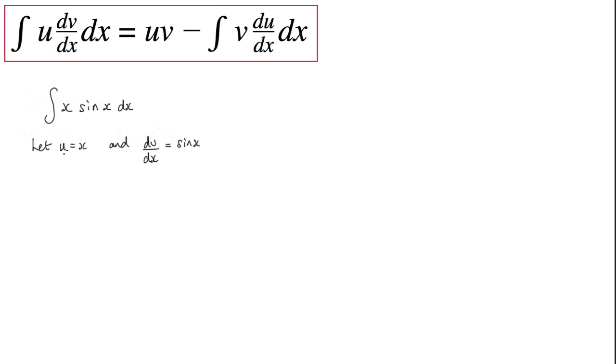Now the first thing I need to do is differentiate this one here, so du by dx will be 1. If I integrate this to find v, because I need v in this formula here, v will be the integral of sine x, which is minus cos x. Obviously I would normally have a constant of integration here, but I can leave that to the end.